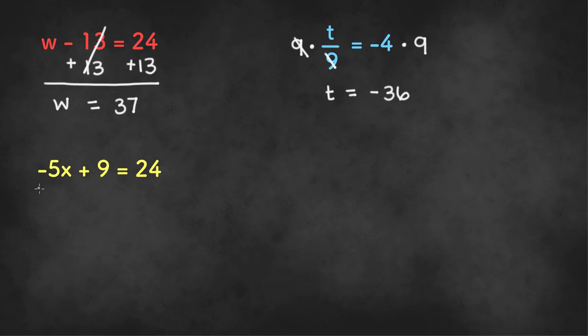The last example here is a two-step equation. When we have two-step equations, we have to start with adding or subtracting first instead of starting with multiplying or dividing. So we need to first subtract 9 from both sides.